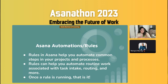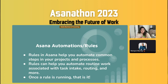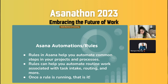This is what I pulled from Asana as the source of truth: rules in Asana help you automate common steps in your projects and processes. Rules also help you automate routine work associated with tasks — intake, routing, and so much more. And the beautiful thing about an automation is once it's built and it's on, that's it. You don't have to go back and make changes or verify that it's working. So long as it meets the criteria the automation requires, you never have to touch it again.